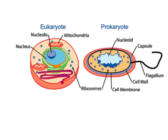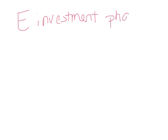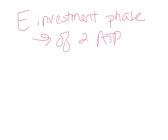When pyruvic acid enters the mitochondria, one carbon is removed from the three-carbon molecule, leaving a two-carbon fragment and releasing a carbon dioxide as waste. This is where the CO2 from cellular respiration is born. Electrons are then stripped from that two-carbon fragment by the NAD+ electron carrier, which gets reduced to NADH while the carbons are oxidized.